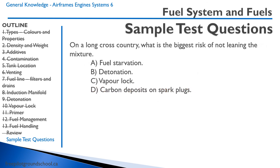On a long cross-country, what is the biggest risk of not leaning the mixture? A — fuel starvation. That is correct, because you will be using up to 50% more fuel than planned. B — detonation — no, that's if the mixture is too lean. C — vapor lock — no. D — carbon deposits on spark plugs — that's more of a maintenance issue over many flights. The correct answer is A, fuel starvation.